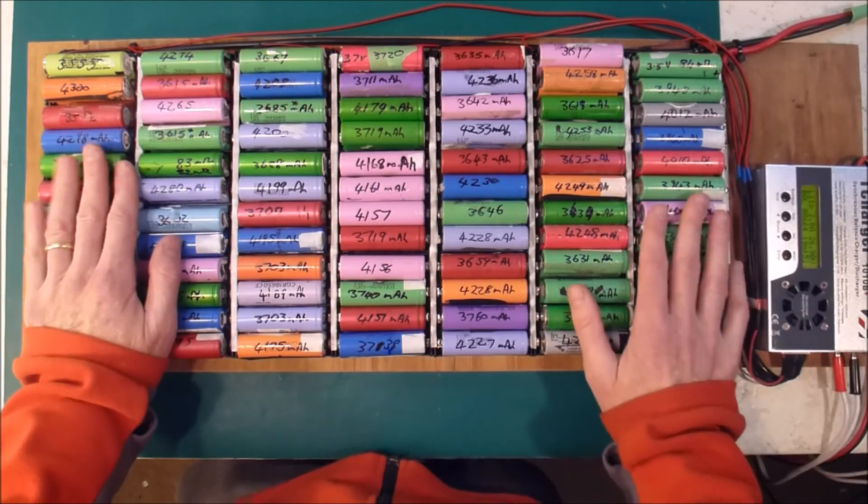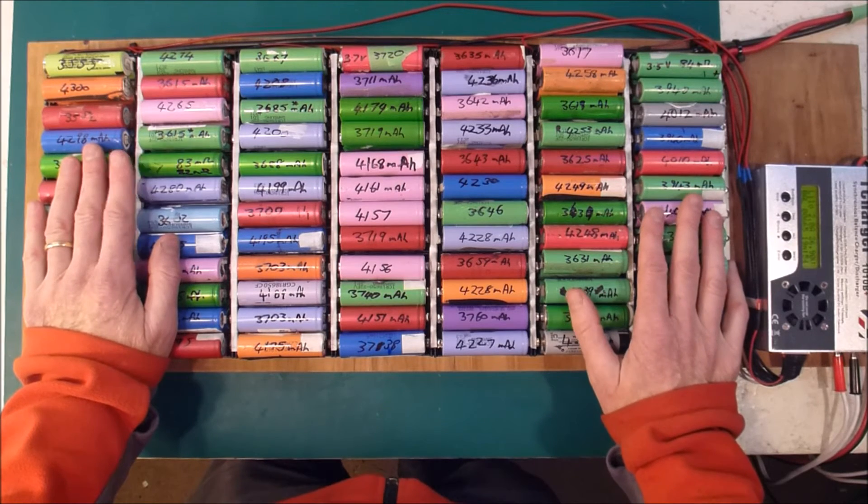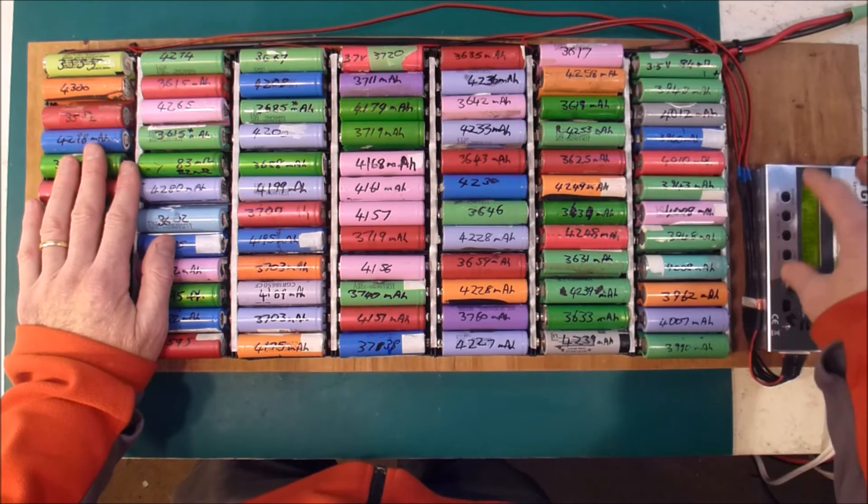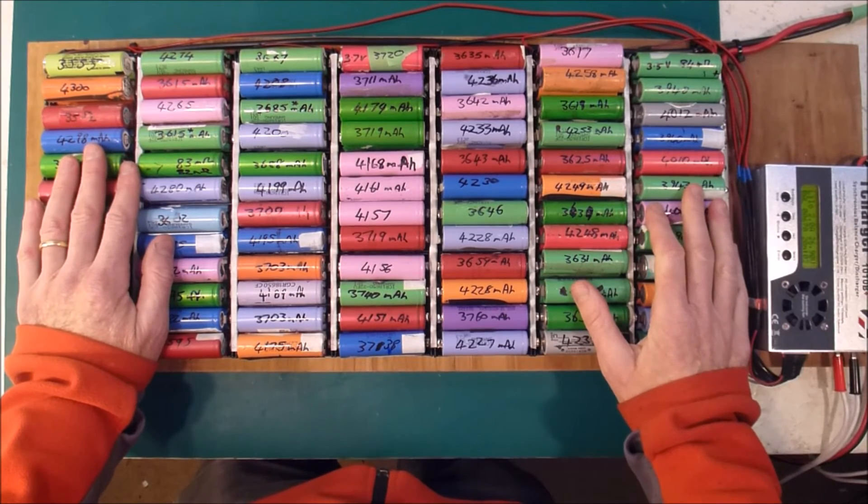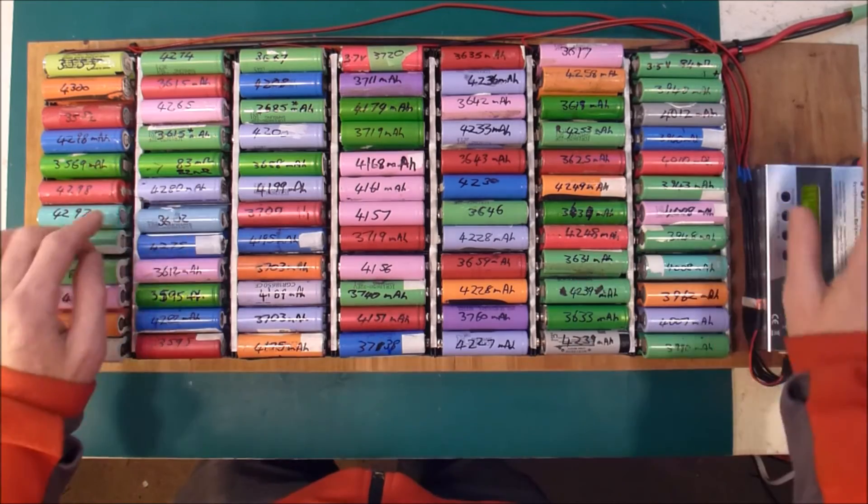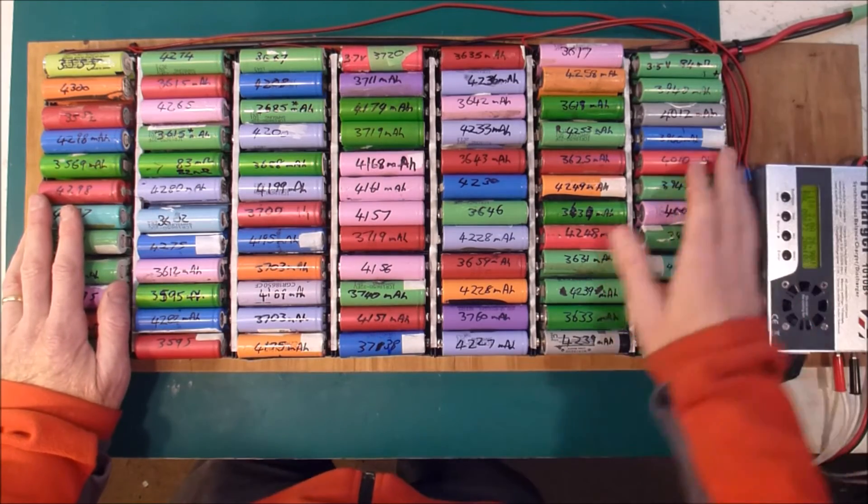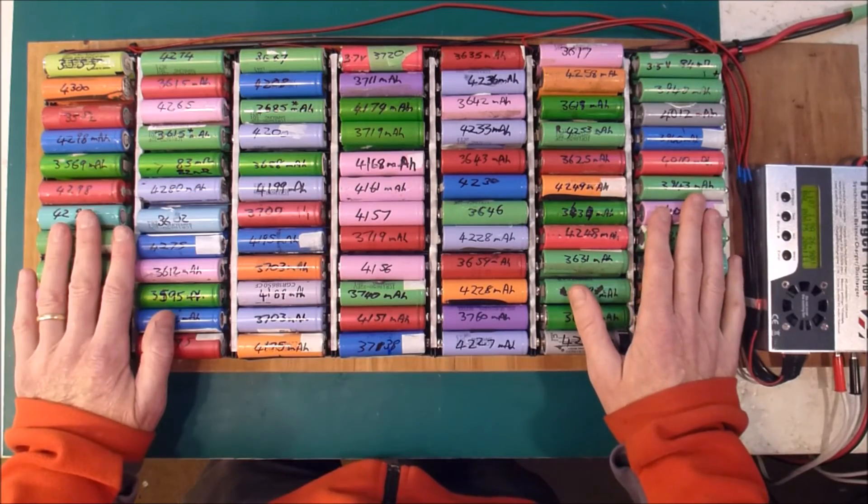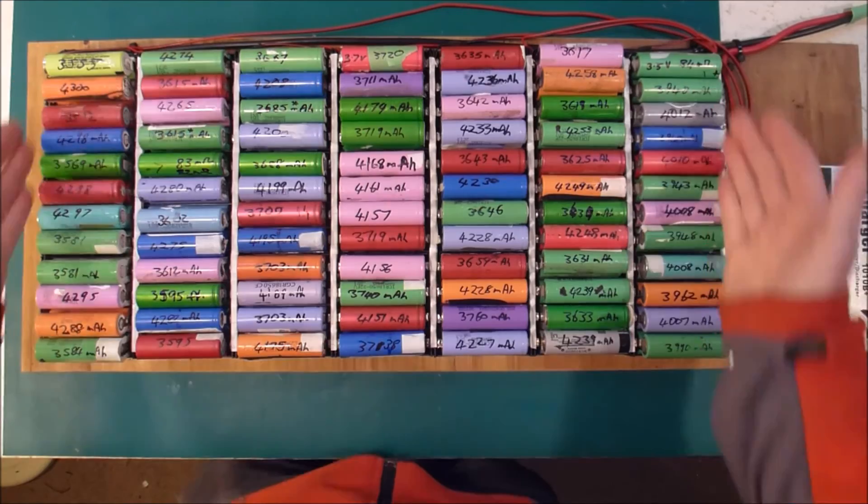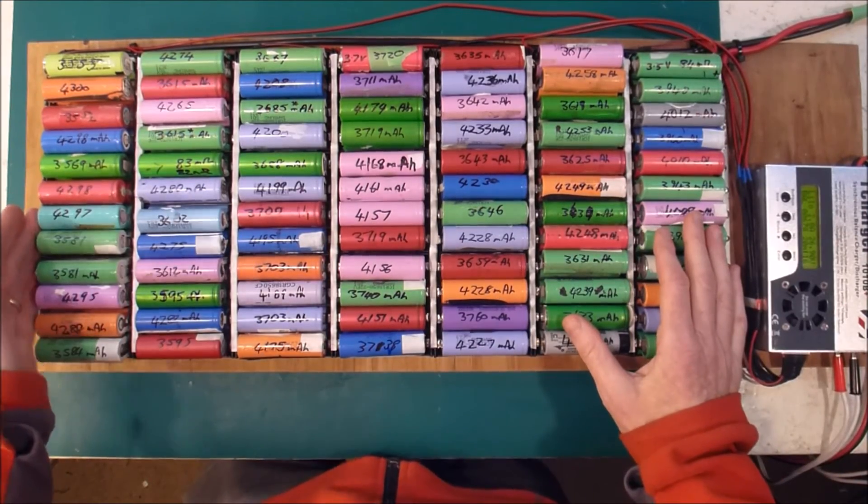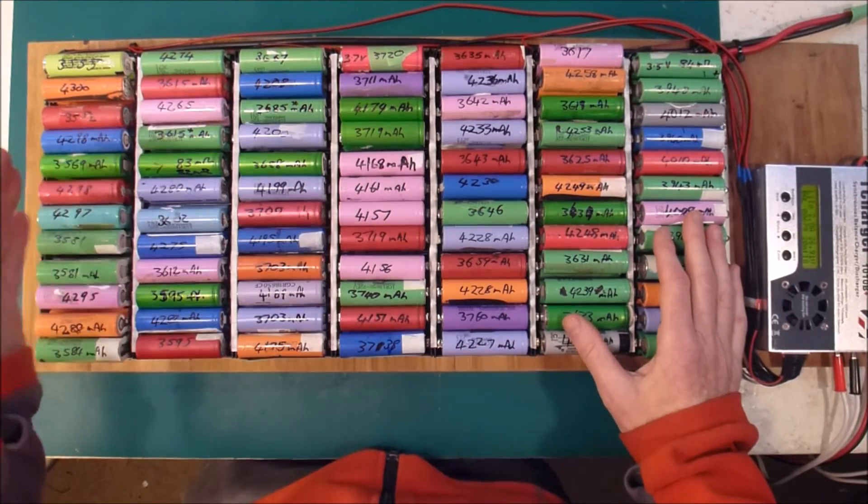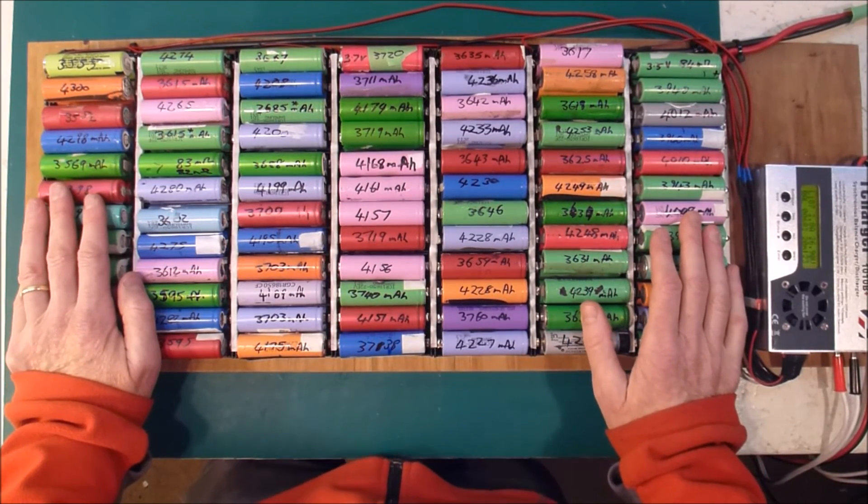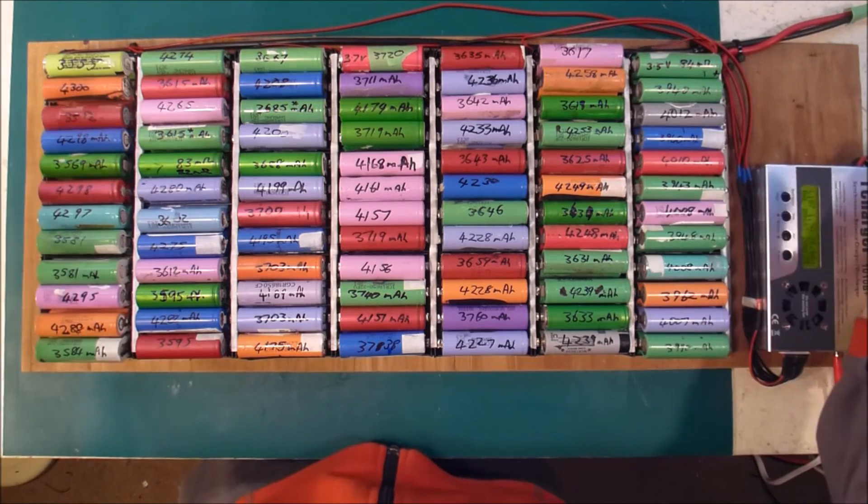So I'm going to try this without a BMS for a while, and just see how that goes. But I will put in some breaker switches. So I've got fusing, I've got breaker switches, I'll have a cell logger to manually eyeball the voltage, and because I'm playing with these things all the time, I'll be looking at that probably at least once a day.